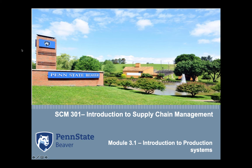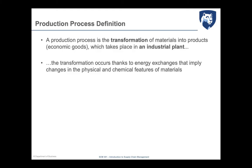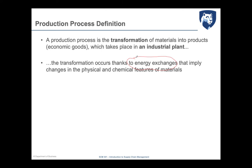This lecture refers to some preliminary concepts about production systems, particularly how to interpret and classify production systems from a technical perspective. A production process represents a transformation of material into products which takes place in an industrial plant. Production is characterized by transformation activities that take course thanks to energy exchanges that imply changing the physical and chemical features of materials.